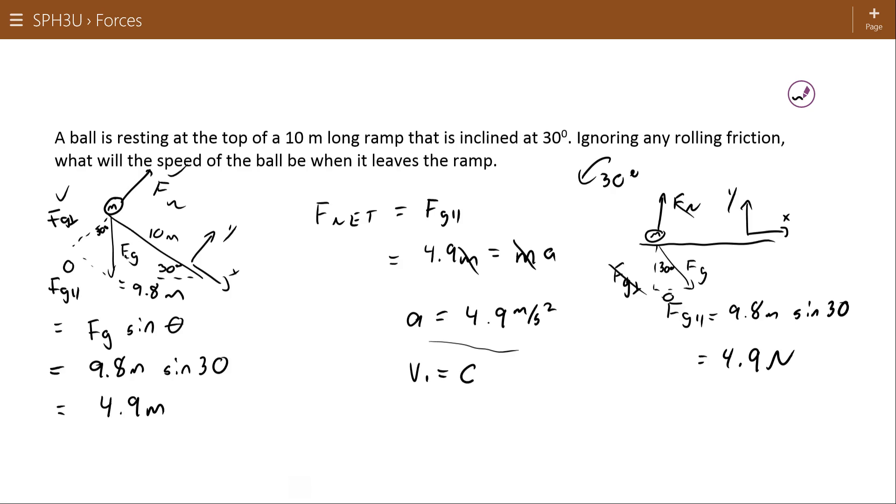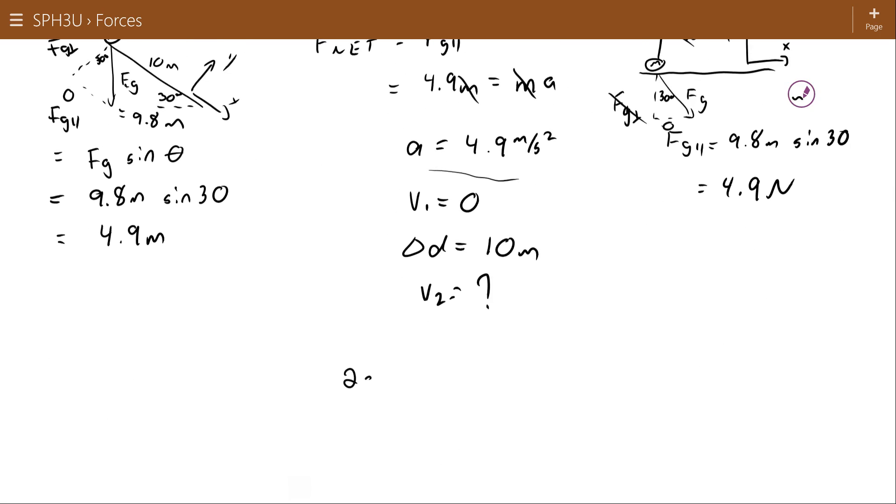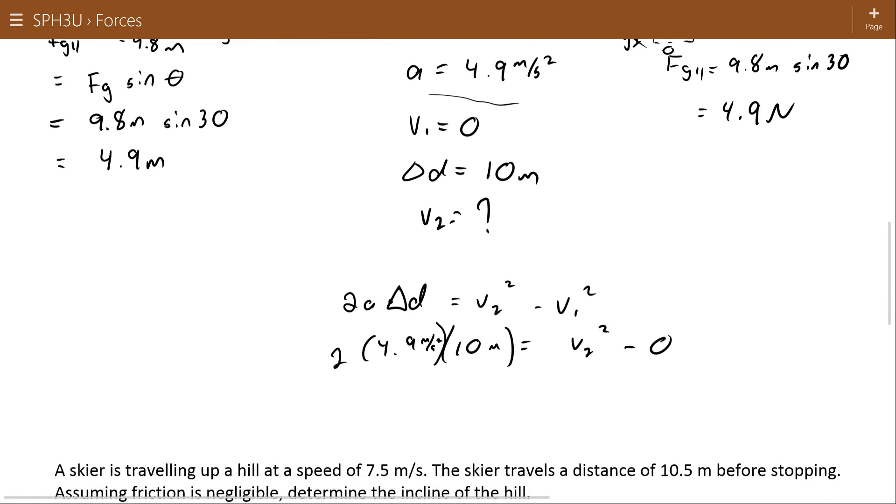It's resting at the top, which means my initial velocity is zero. I've got a displacement on the ramp of 10 meters, and what I want to know is what is my final velocity as this object comes off the ramp. So, started with dynamics. Use Newton's second law to get to a kinematics or five equations of motion problem. 2ad equals v2 squared minus v1 squared. 2 times 4.9 times 10, v2 squared minus zero. So that's 98 on this side. 98 meters squared per second squared. V2 squared, so v2 works out to be the square root of that. 9.9 meters per second.